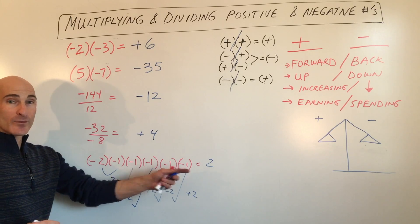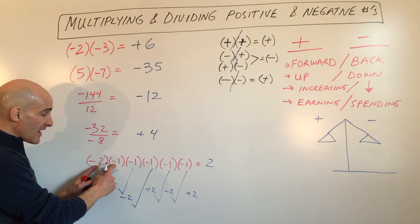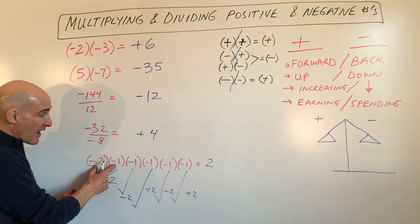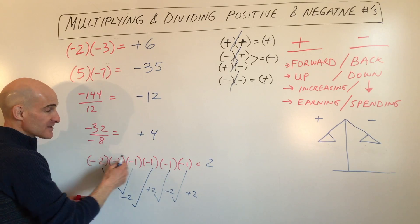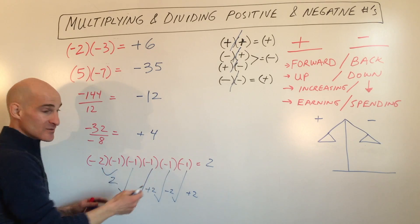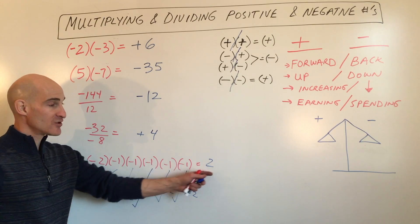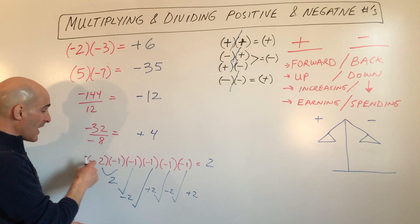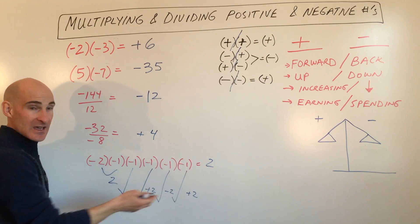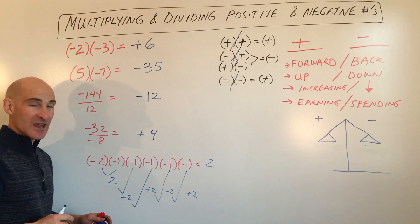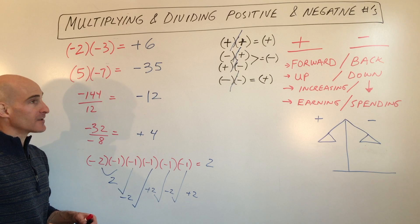That was a lot of work, but we could have made it a little easier. If you have an even number of negatives — for every 2 negatives you get a positive — a positive times a positive times a positive is a positive. So if you have an even number of negatives — 2, 4, 6 — if it's even, you're going to get a positive. If we added one more negative, a negative times that positive number would be negative. So if you have an odd number of negatives it'll be negative, and if you have an even number of negatives it's going to be positive when you're multiplying or dividing.